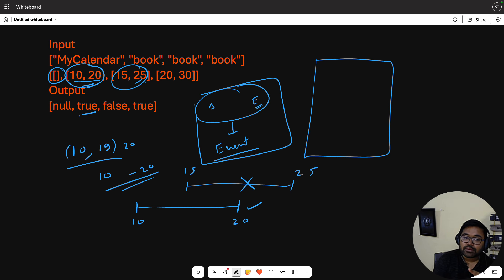Next I have 15,25. You already have 10 and 20 stored, so this returns false. Next we have 20 to 30. Although at 20 you might think there's overlap, but again it's 10 to 19 and the next one is 20 to 29. You can store this easily because 19 and 20 don't overlap, so you can return true. This is your technique.